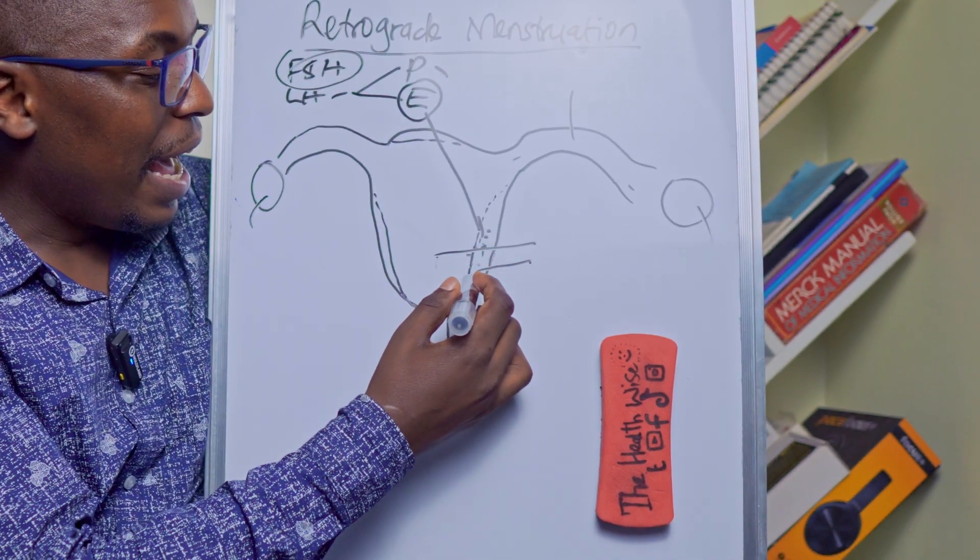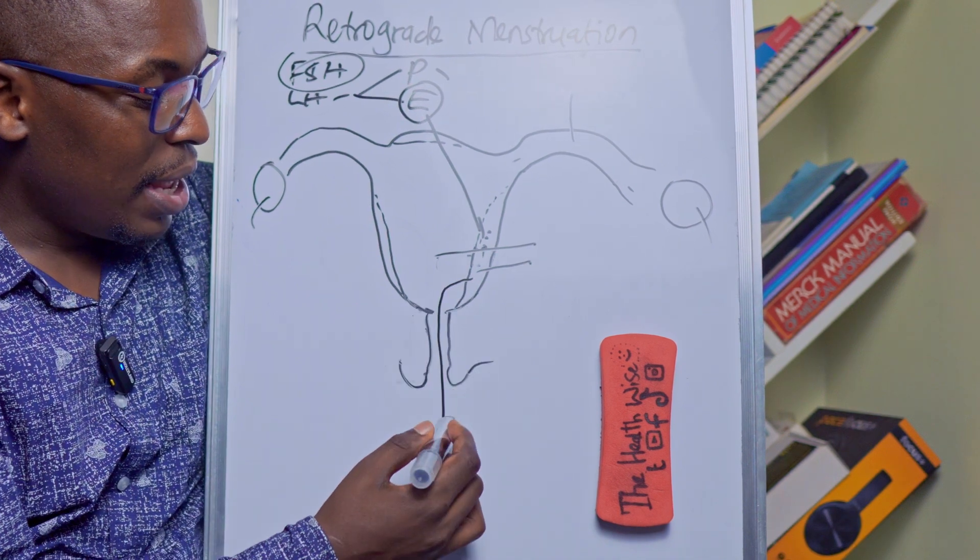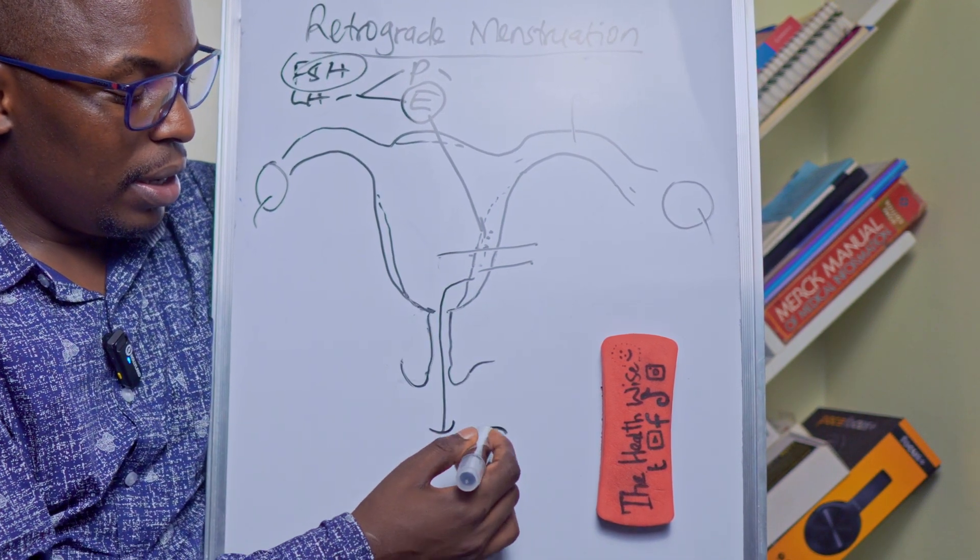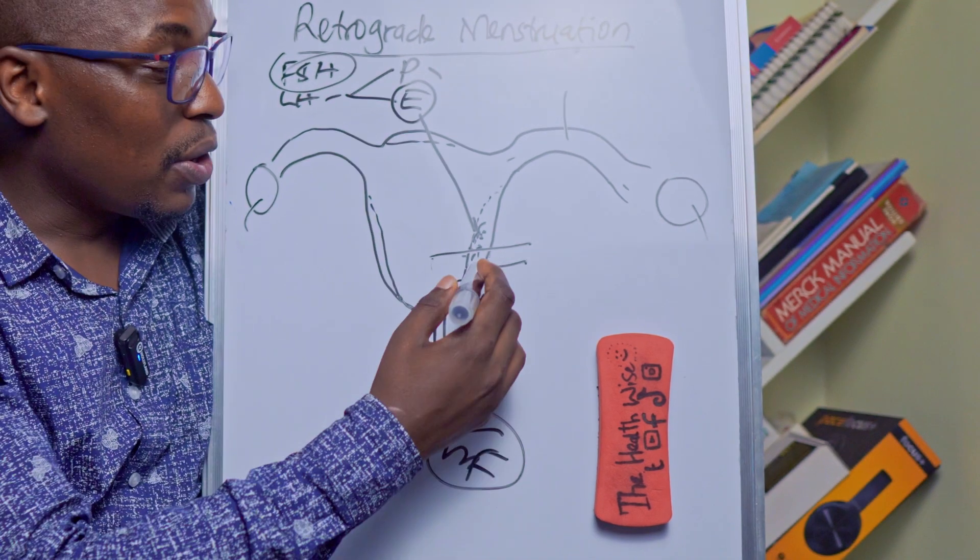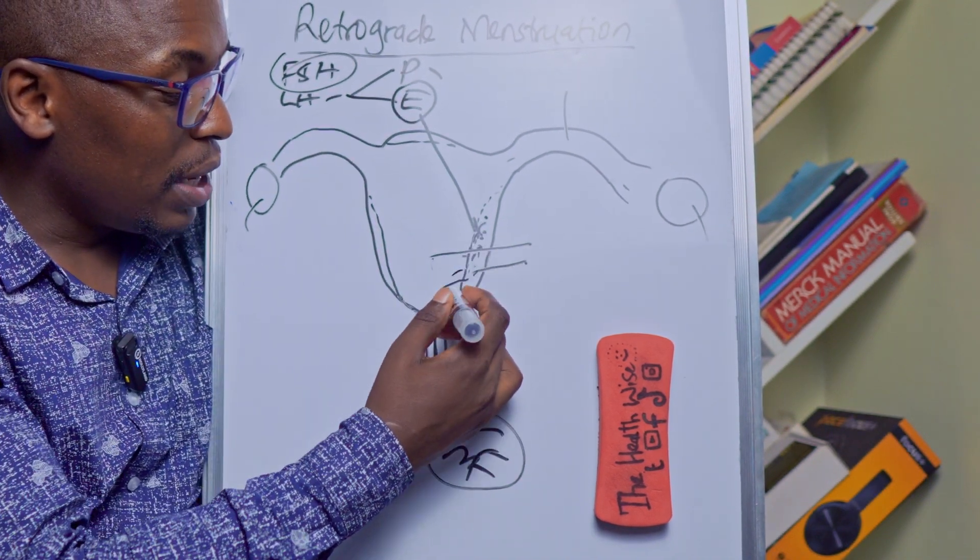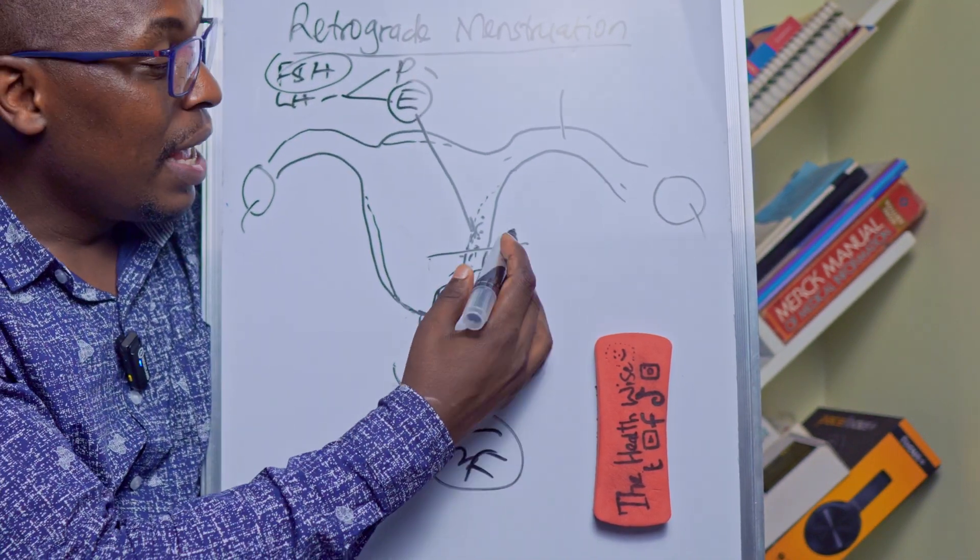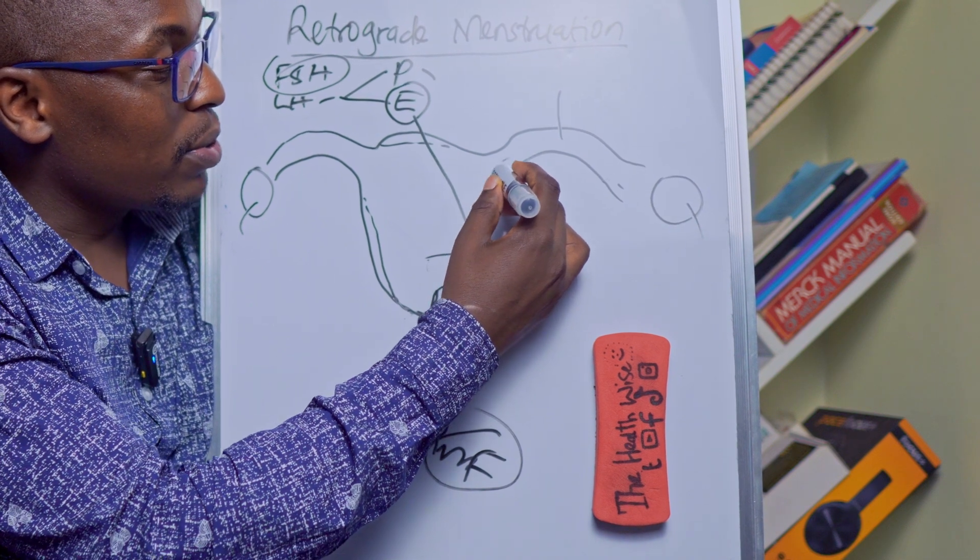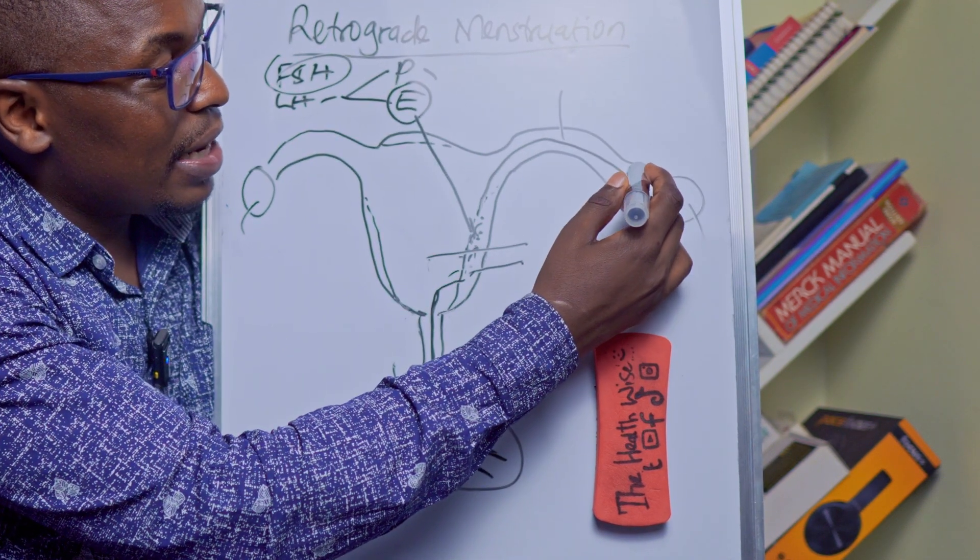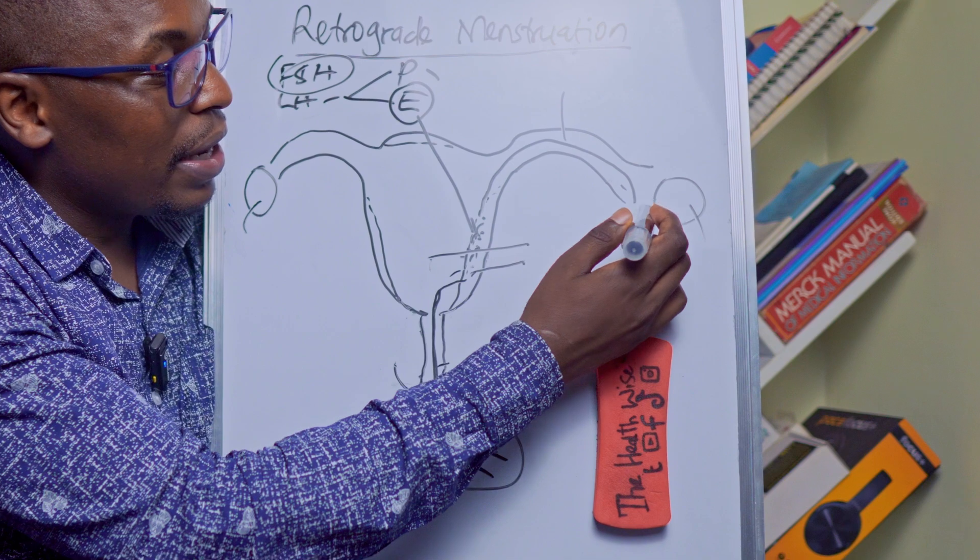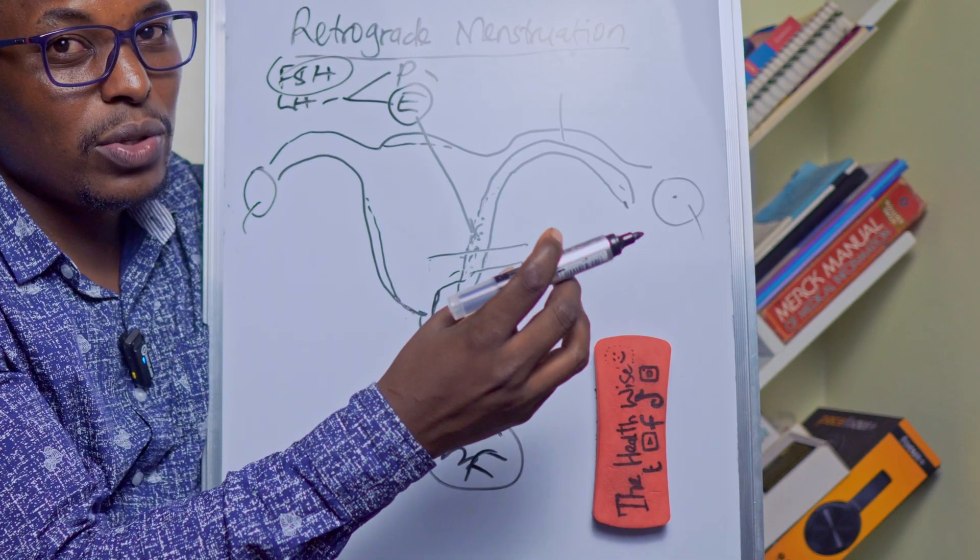And this is what usually flows out as the menstrual flow, this is the menses. Now not every content of this wall will move down through the vaginal canal. Some of it usually goes up through the oviduct and because this is like an open funnel, there's an opening here between the ovary and this.